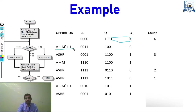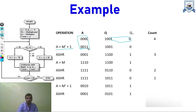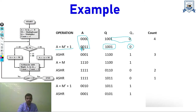Using two's complement subtraction, we compute A plus M-dash plus 1. M-dash is 0010, adding 1 gives 0011, and adding to accumulator 0000 gives 0011. Q remains as-is and Q-minus-1 remains as-is. After that, we perform arithmetic right shift: the sign bit is copied and all bits shift right by one.